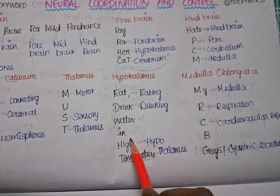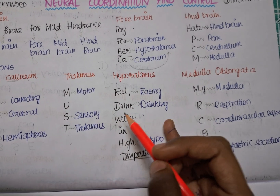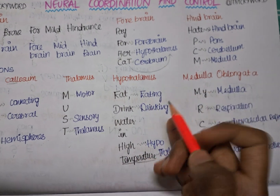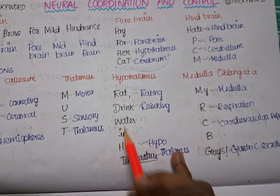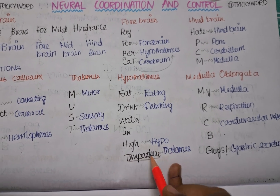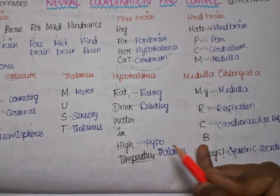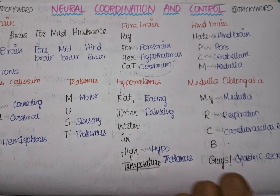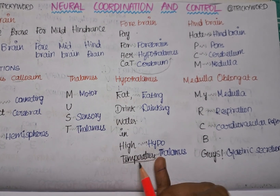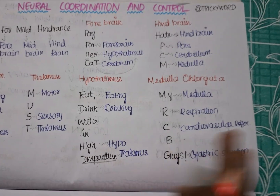For hypothalamus, the trick is 'Eat drink water in high temperature' — Eat is for eating, Drink is for drinking, and High Temperature links to hypothalamus because hypo connects to temperature regulation. So the hypothalamus deals with eating, drinking, and temperature maintenance.